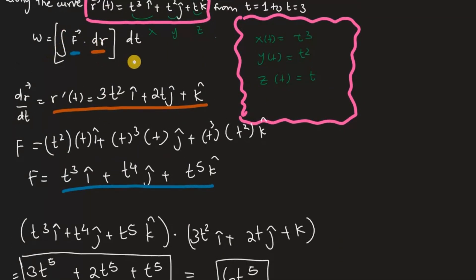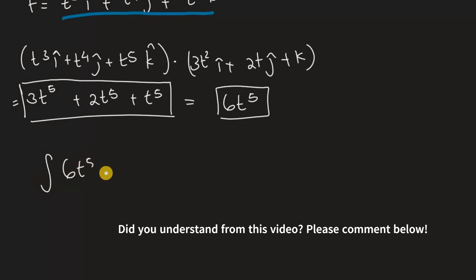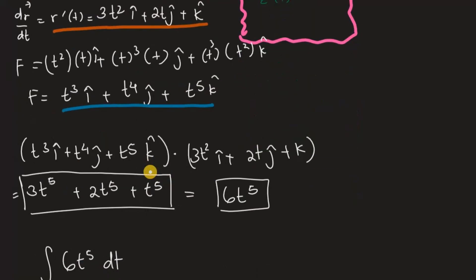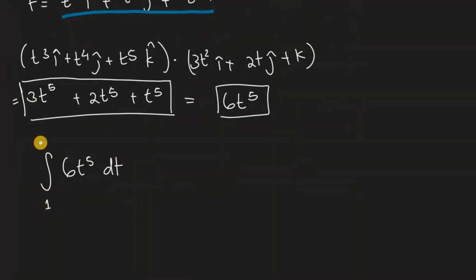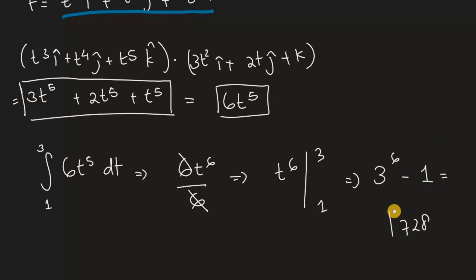Now we can finally integrate with respect to dt. We're integrating 6t to the power of 5 dt from t equals 1 to t equals 3. Integrating gives 6t to the power of 6 over 6 — the 6s cancel — leaving t to the power of 6 evaluated from 1 to 3. Plugging in: 3 to the power of 6 minus 1 to the power of 6 equals 729 minus 1, which gives us 728 as the final answer.